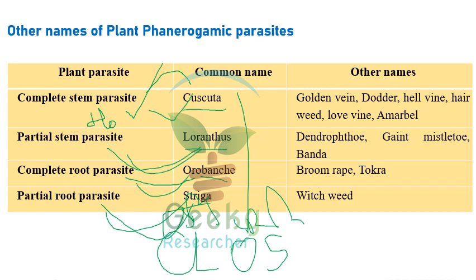Other names: Cascuta is called golden vine, dodder, helvine, hair weed, love vine, and Amarbell. Loranthus is called Dendrophthoë, giant mistletoe, and Banda. Warabanki is called broom rape or Tokra. Striga is otherwise called witchweed. In exams they may ask: 'Broom rape is an example of which type of parasite?' - that is Warabanki.